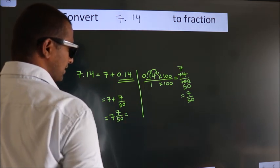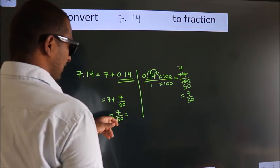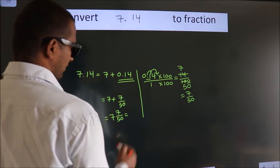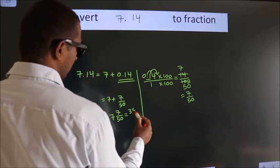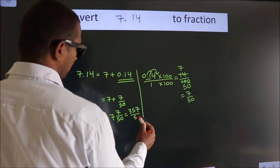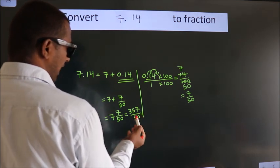And in improper fraction it is 7 into 50, 350 plus 7. 357 by 50 is our fraction.